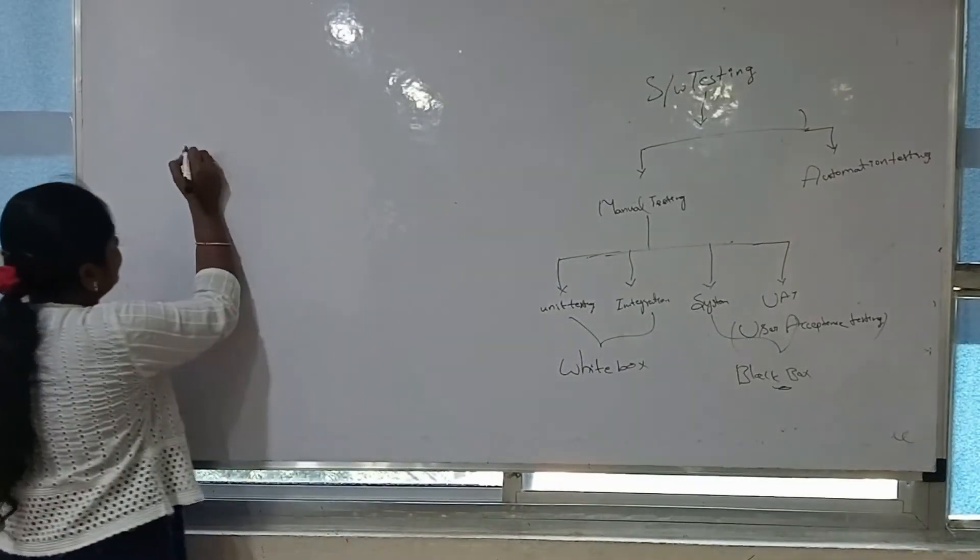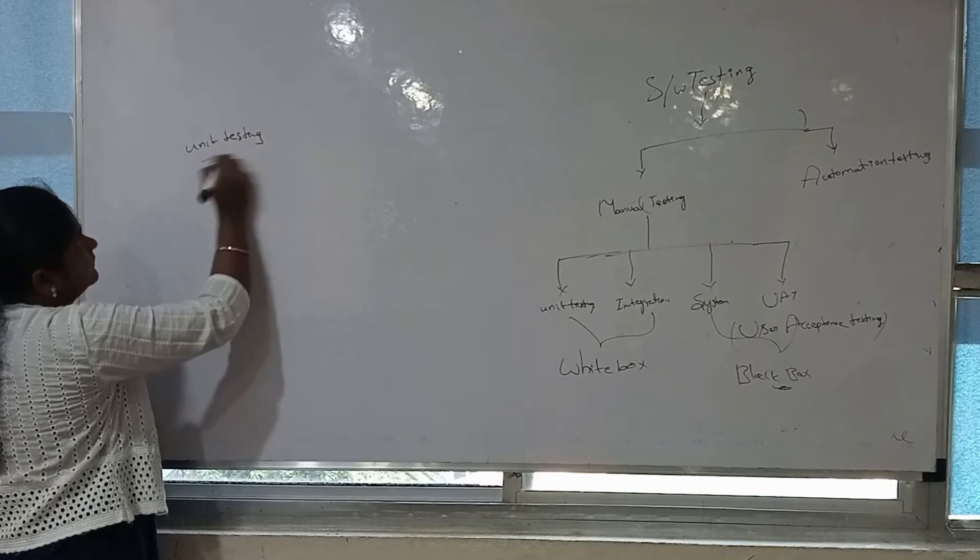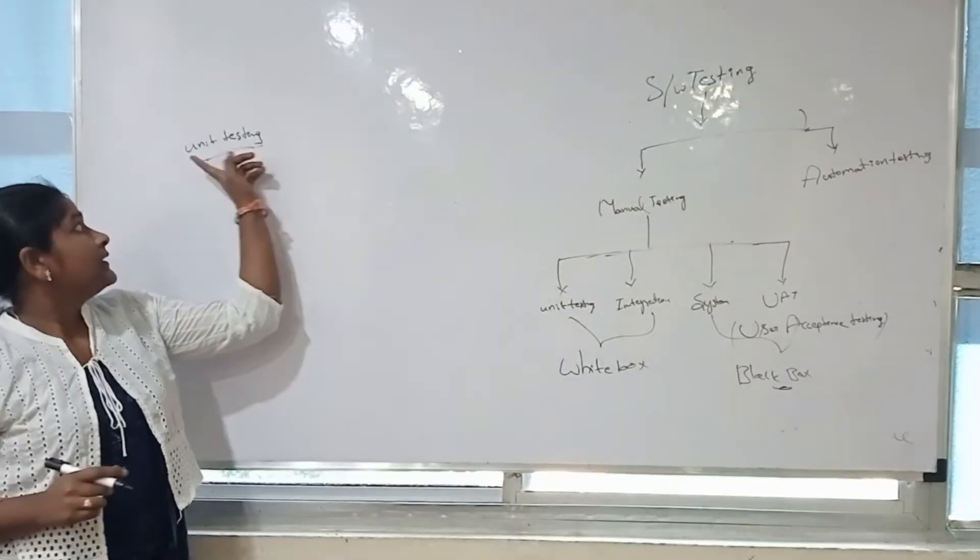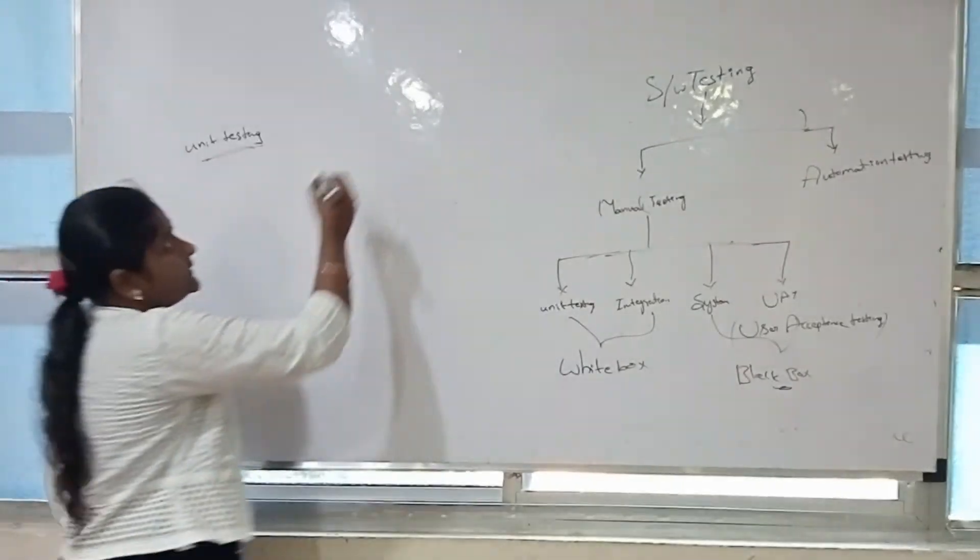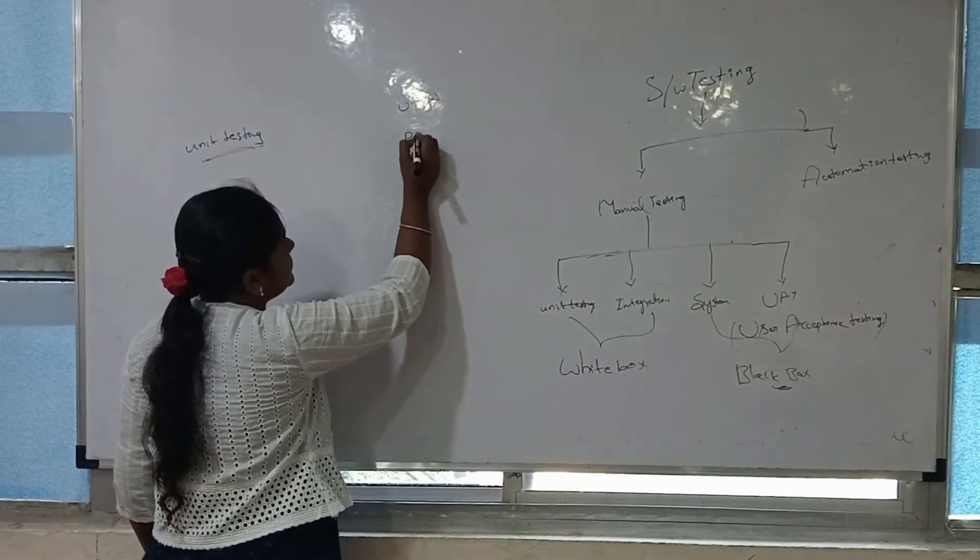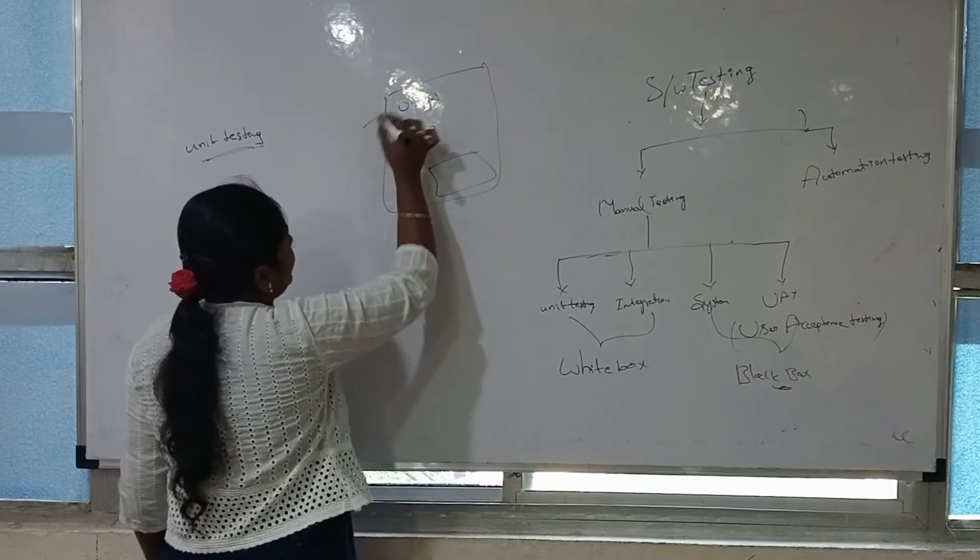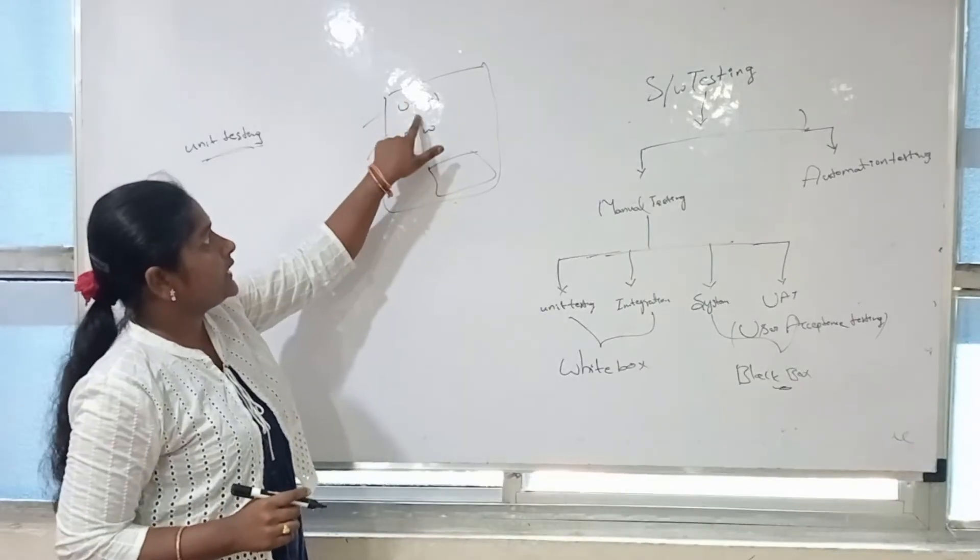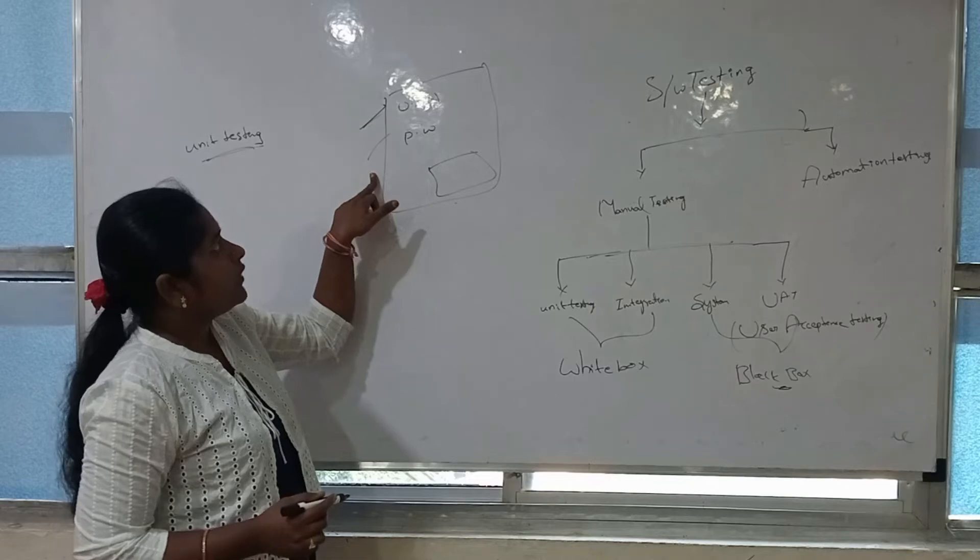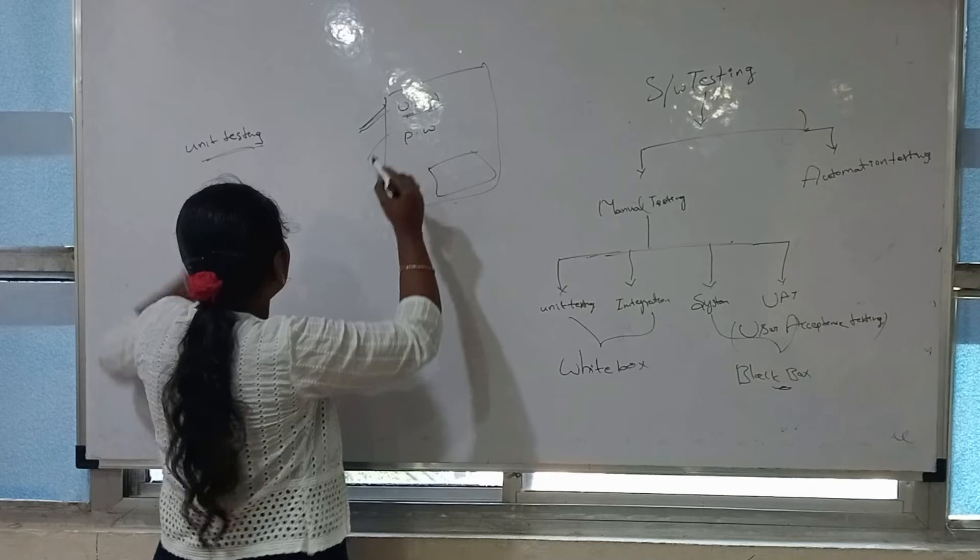Unit testing. Unit is nothing but a single module or a single unit test. We want to test a single module. For example, we have a login page with username and password. In that, we have two modules or two units. First, the developer develops the single unit and then tests it. After that, the developer develops the next unit and tests it. This is called unit testing.